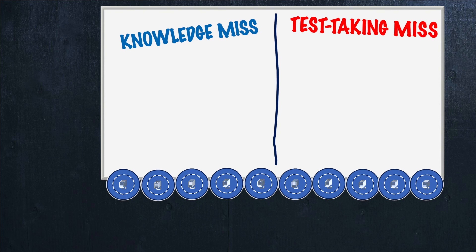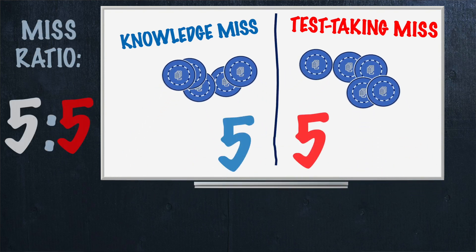A third example for the miss ratio might be closer to an even split — say a 5 to 5 ratio. This could call for a combo of study skills and test taking skills. But even a 50% occurrence of test taking issues is staggering. Even if the ratio was 6 knowledge to 4 test taking, or even 7 to 3, that's a lot of points being left on the table and that can make all the difference on test day. That means the test taking has to be fixed. Thinking in terms of the miss ratio is a great way to start assessing the nature of your test taking if you think you might be struggling here.